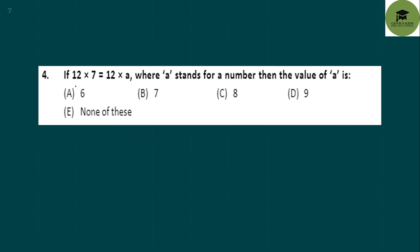Fourth question: If 12 × 7 = 12 × a, then what is the value of a? Since 12 × 7 equals 84, a must equal 7. Option B is your correct answer.